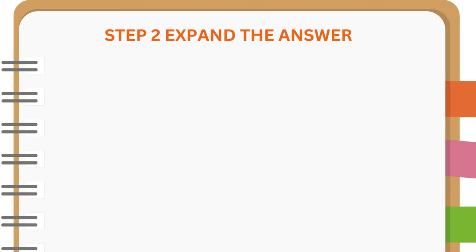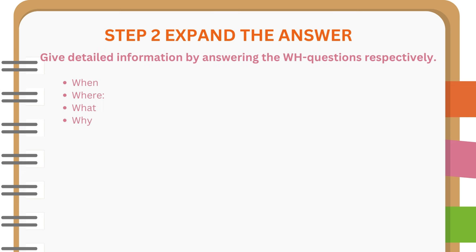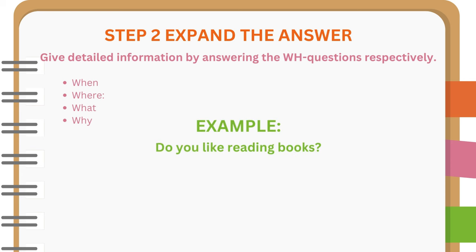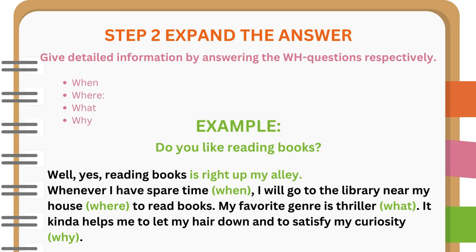Step 2: Expand the answer. Give detailed information by answering the WH questions respectively. For example, do you like reading books? Well, yes. Reading books is right up my alley. Whenever I have spare time, I will go to the library near my house to read books. My favorite genre is thriller. It kind of helps me to let my hair down and to satisfy my curiosity.